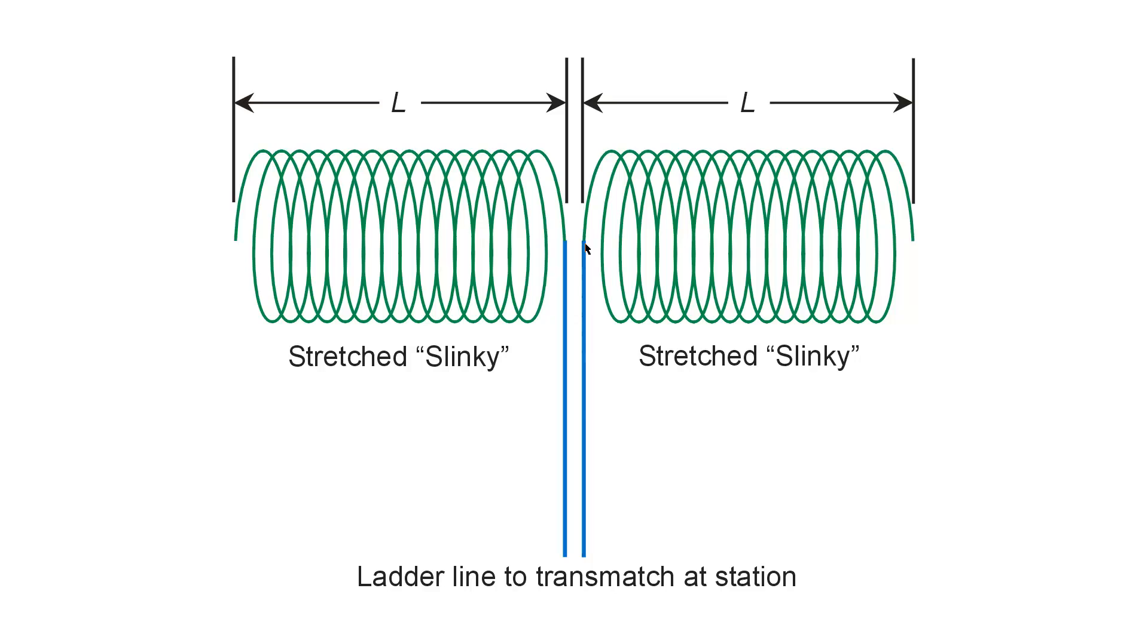And that you not attempt to use a balun at the feed point to convert an unbalanced feed line to the balanced load that two equally stretched slinkies will present. You need, in the ideal case, to feed it with ladder line, low-loss ladder line, open wire feed line, and have a transmatch right at your station.